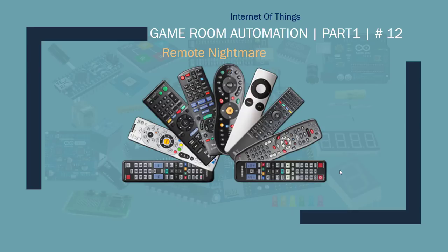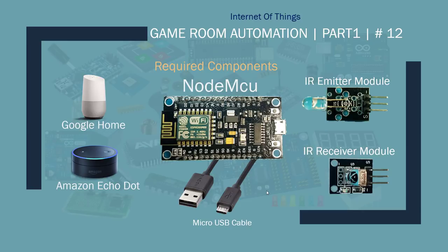I have a 7.1 surround sound setup at home. I have a TV, PlayStation 3, PlayStation 4, a media streamer, Xbox, and other devices. We have a remote nightmare — I lost a couple of remotes, and they're harder to replace because even with universal remote controls, you cannot access all the functionality, especially for the receiver. So to do away with it, I decided to automate my game room. This is part one of the game room automation.